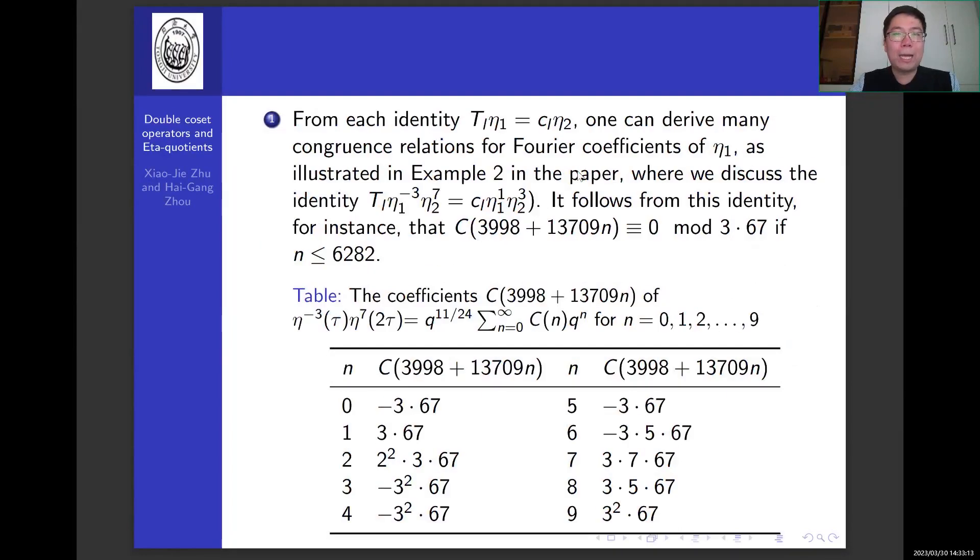From each identity, one can derive many congruence relations for Fourier coefficients of eta1, as illustrated in example 2 in the paper.